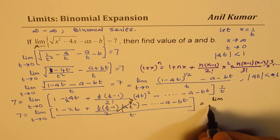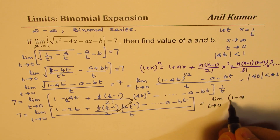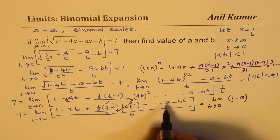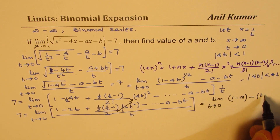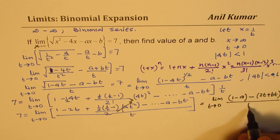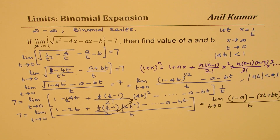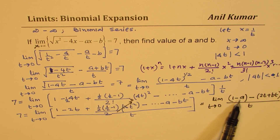So we can write this as: limit t approaches 0 of (1 minus a)/t plus the remaining t terms over t. For the limit to exist, 1 minus a should be zero — otherwise the limit will blow up. That gives us a equals 1.